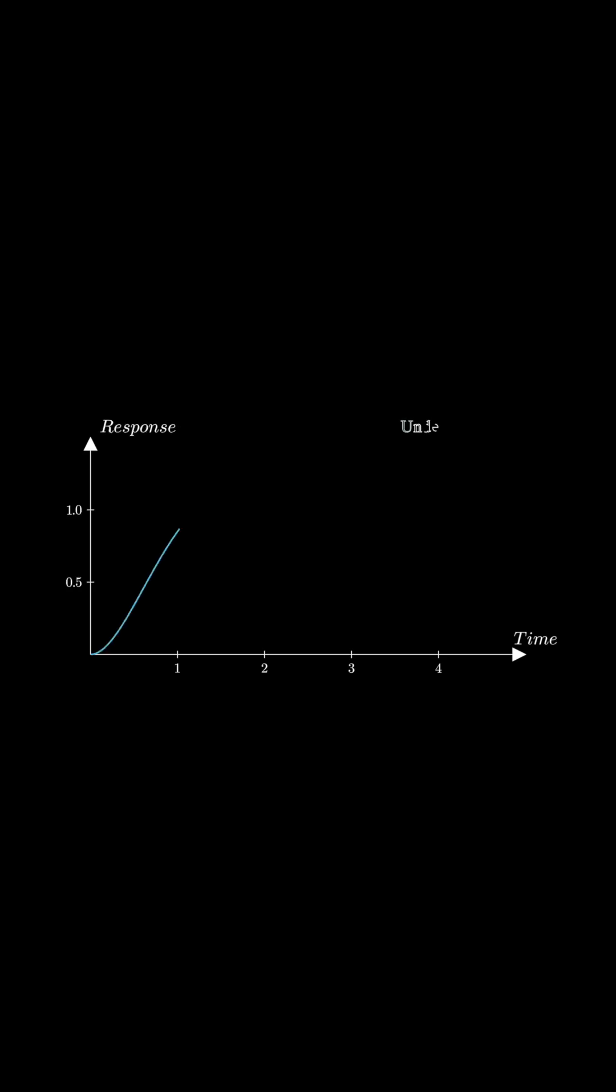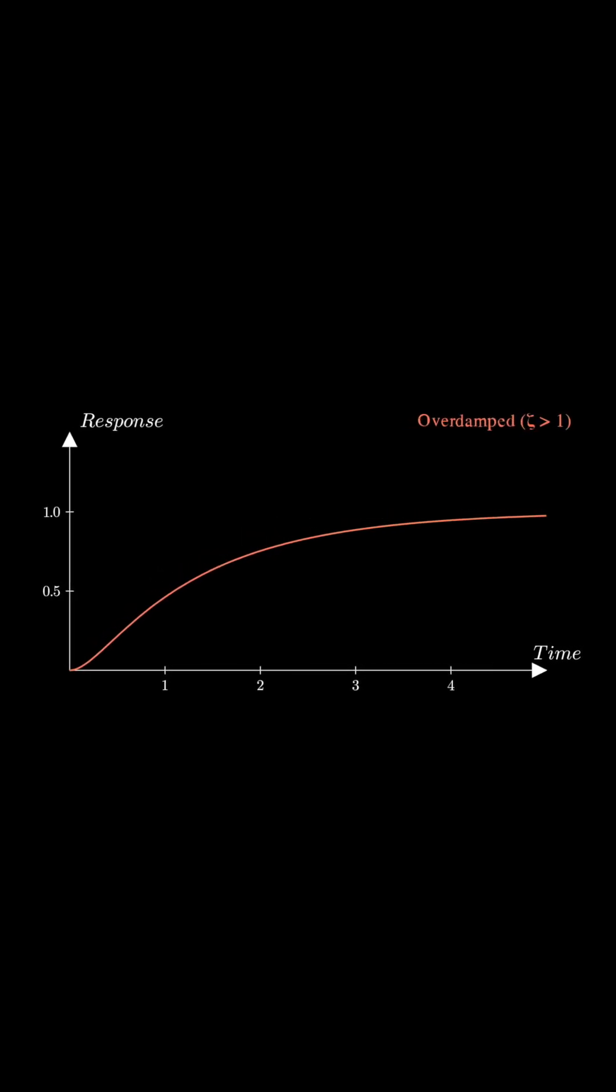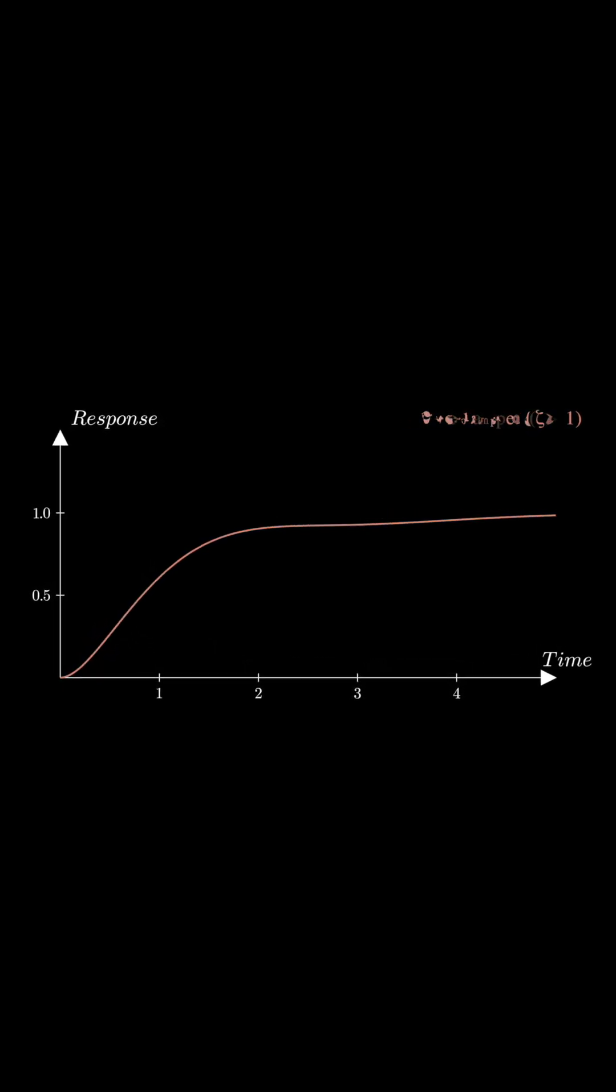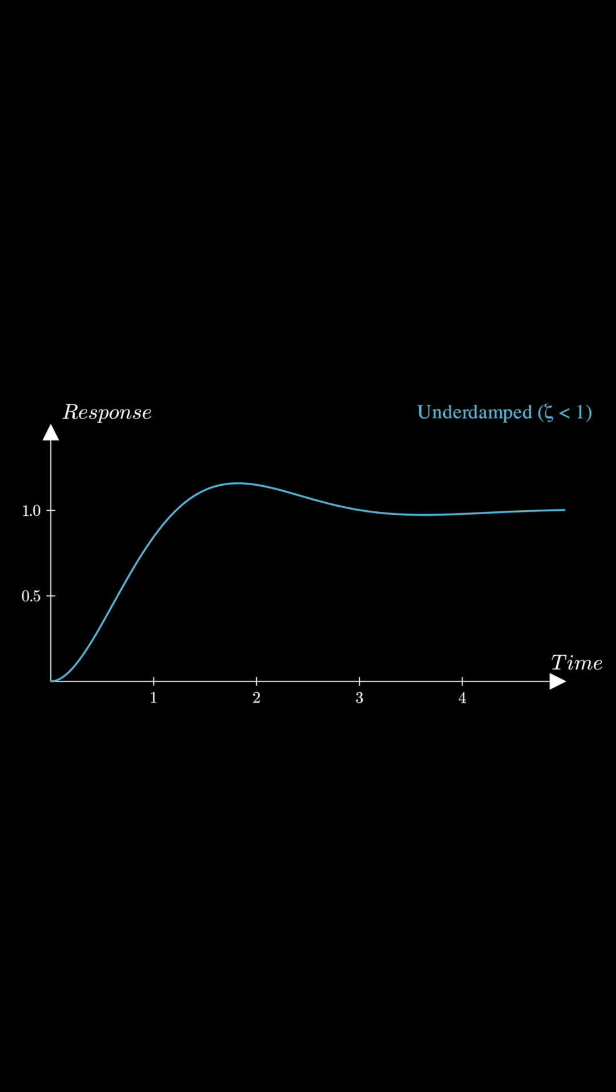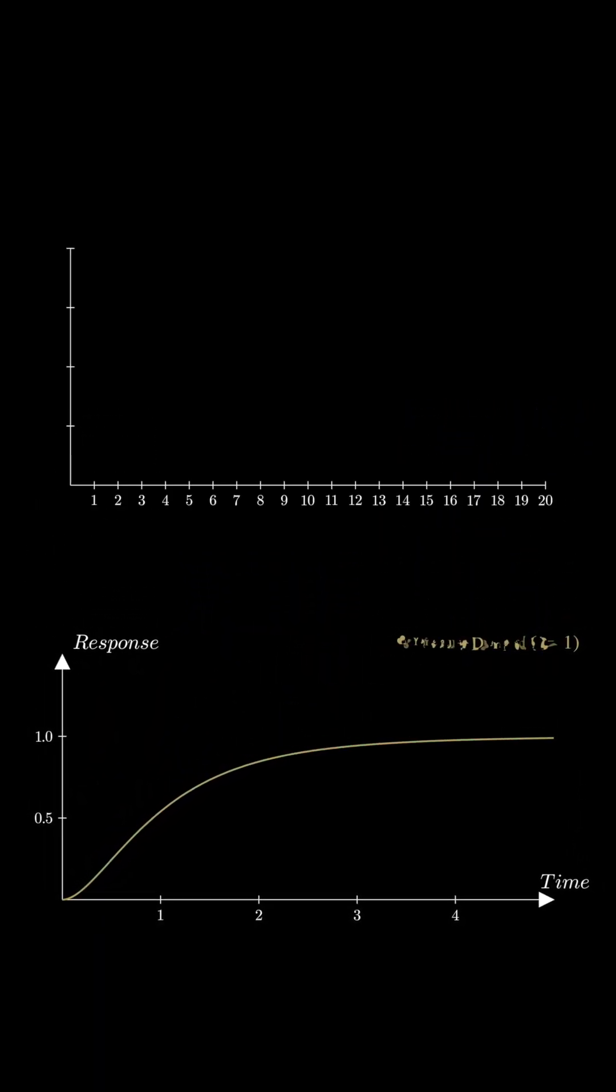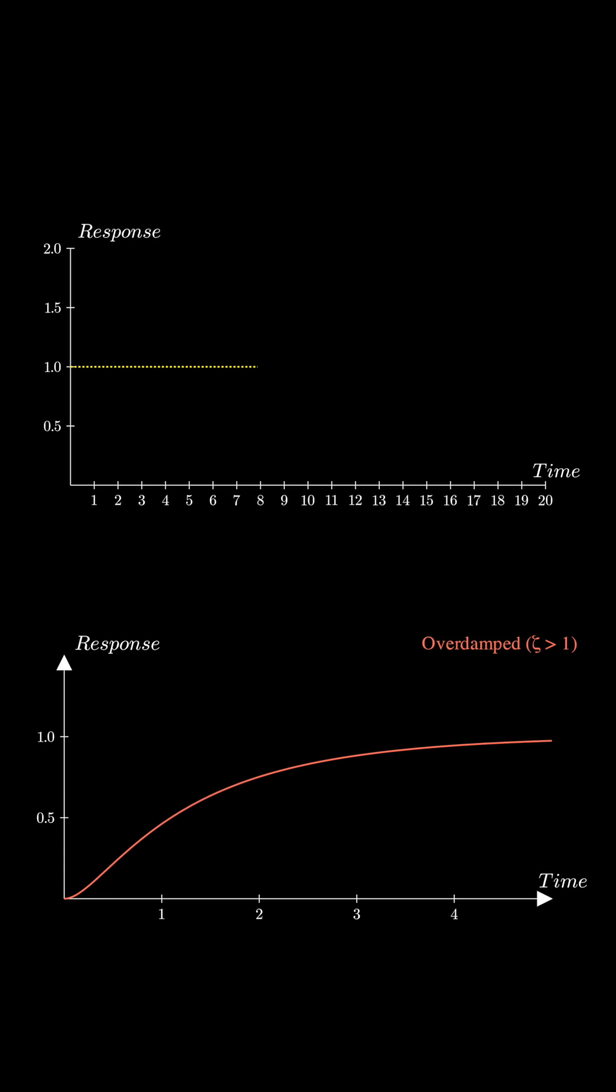Let's compare these responses side by side. For underdamped systems, you'll see oscillations that fade over time. A critically damped system transitions smoothly and quickly. Overdamped systems, while stable, take longer to reach the target. The damping ratio clearly determines the system's behavior.